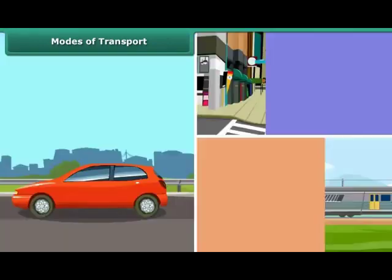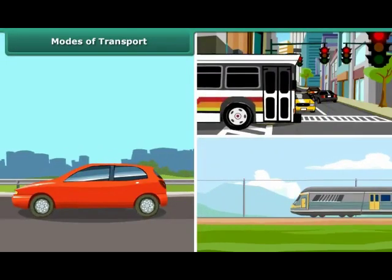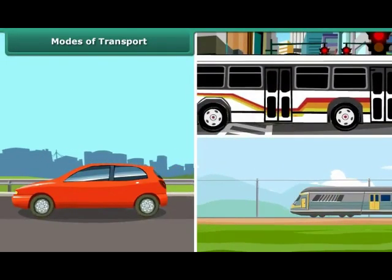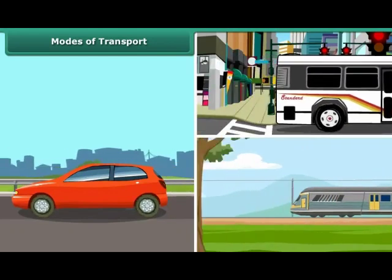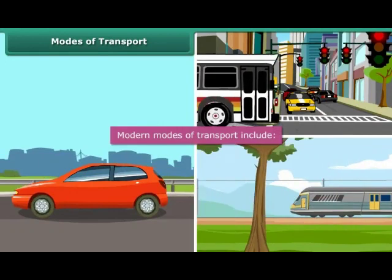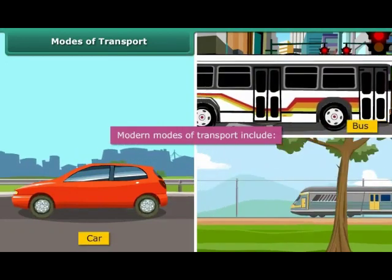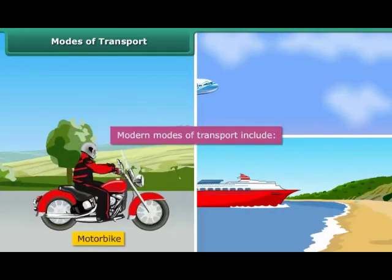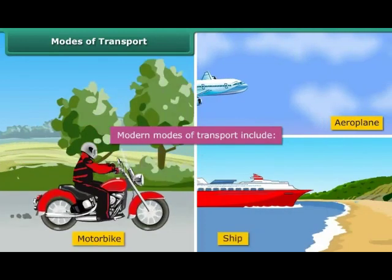Nowadays, we have progressed and we have learnt we can use fuel and natural resources to create better modes of transport. As you can see, we now have cars, buses, roads, railways, motorbikes, aeroplanes, ships etc. to travel.